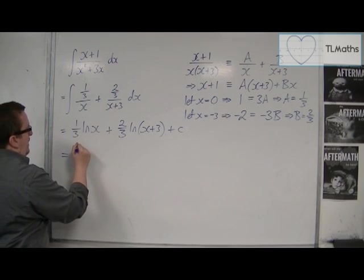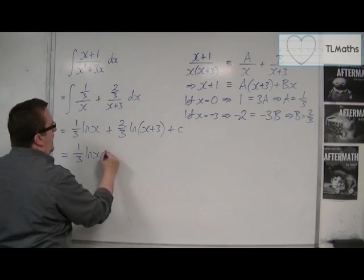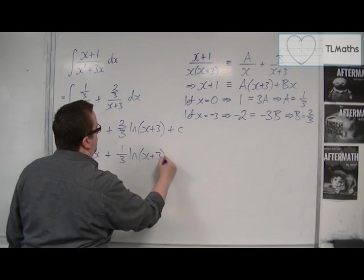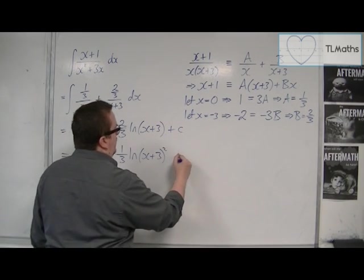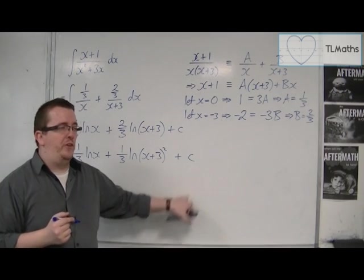So we would have, well, let's do it in a couple of stages. 1 third log x plus 1 third log of x plus 3 squared plus a constant c. OK, I'm going to leave the constant c outside the integral.